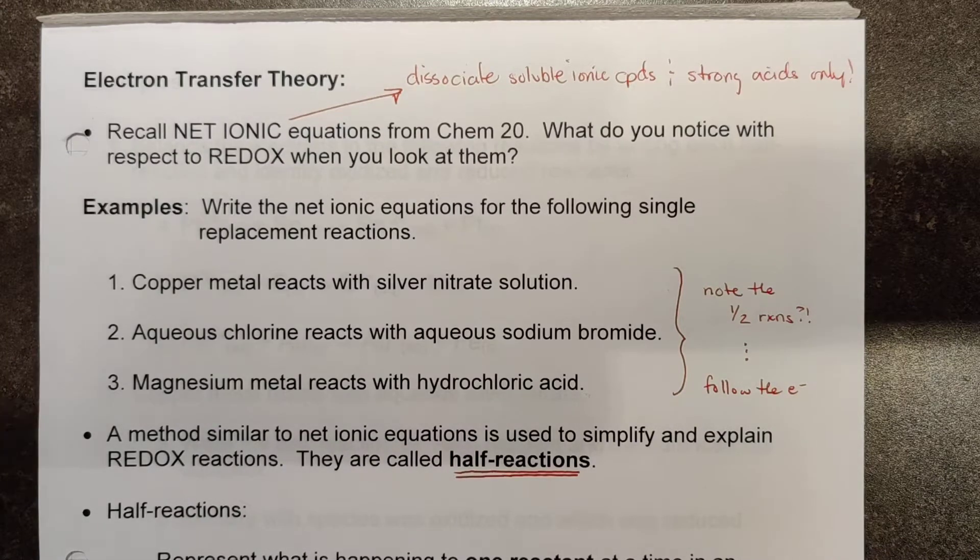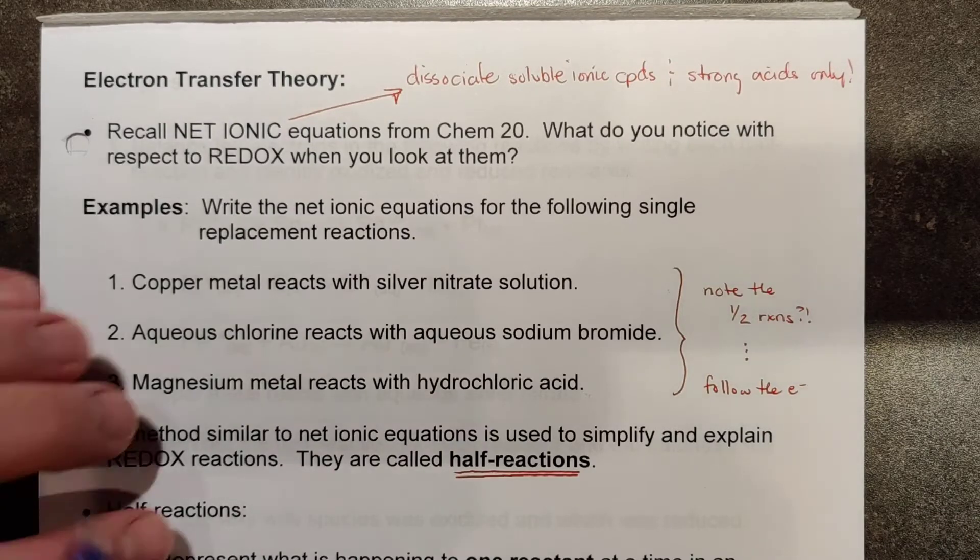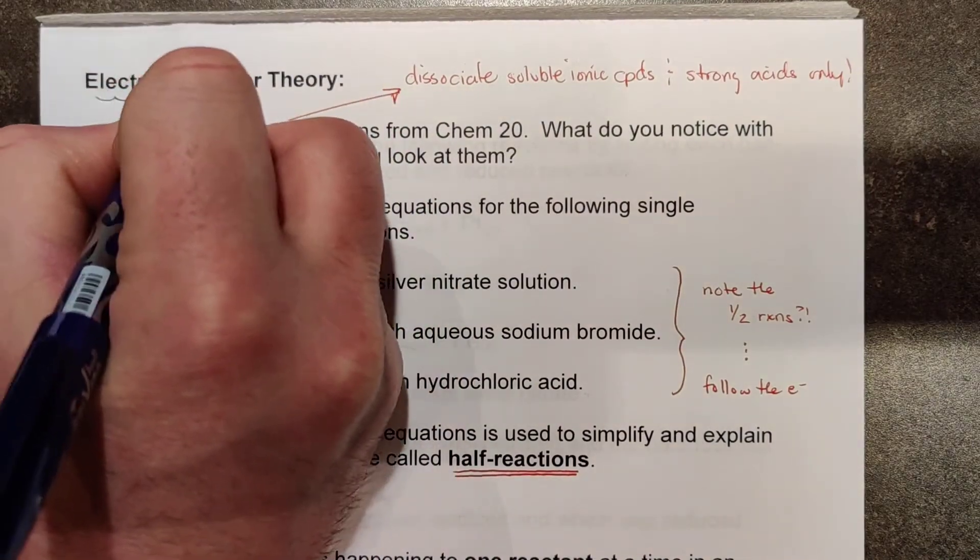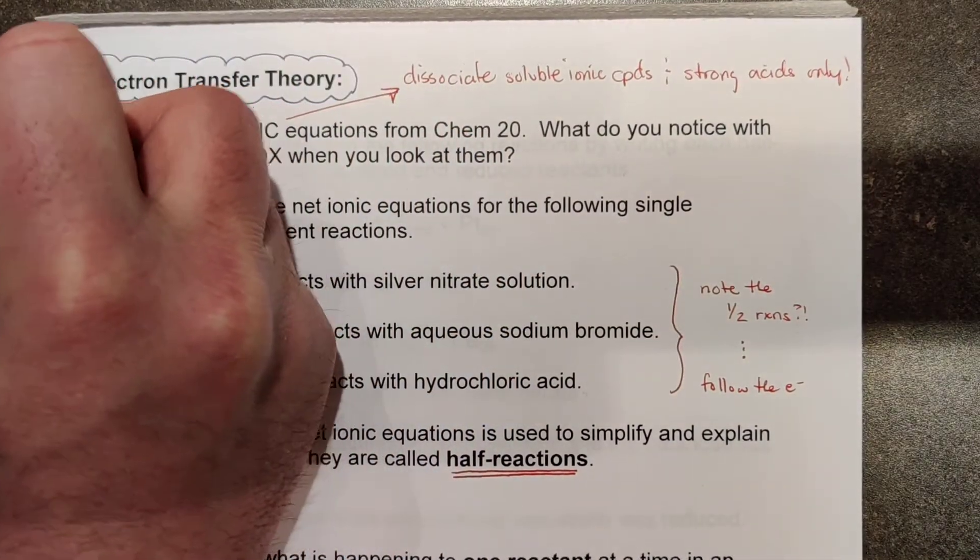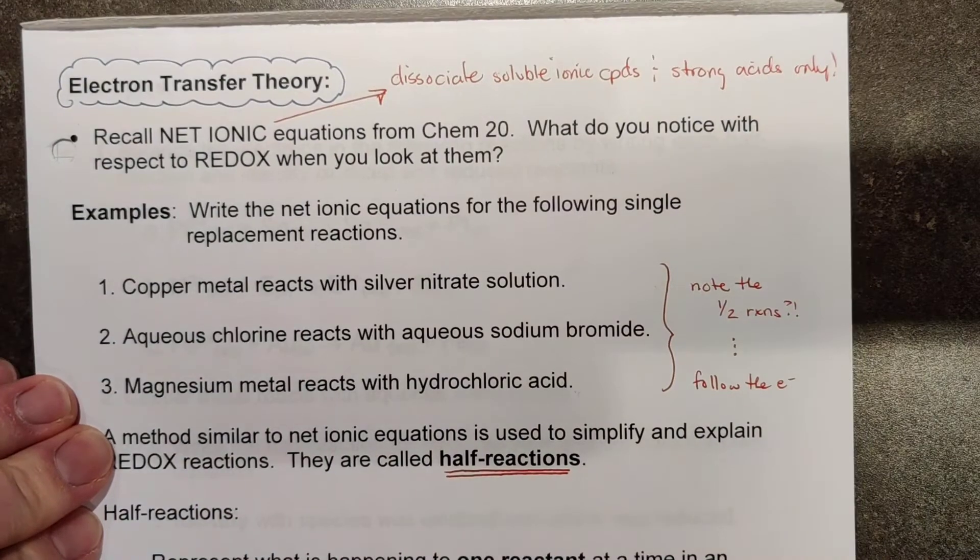Chapter 13.1, lesson number two. We've talked about oxidation and reduction, and now we're going to talk about something known as the electron transfer theory, which is in the end the theory that describes everything we're going to do here in chapters 13 and 14.